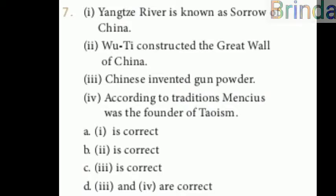Seventh one: which statements are correct? One — Yangtze River is known as Sorrow of China. Two — Yuzi constructed the Great Wall of China. Three — Chinese invented gunpowder. Four — according to tradition, Mencius was the founder of Taoism. The answer is C — third one is correct: Chinese invented gunpowder.